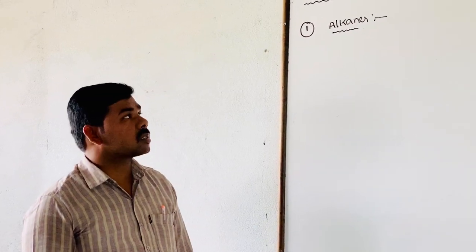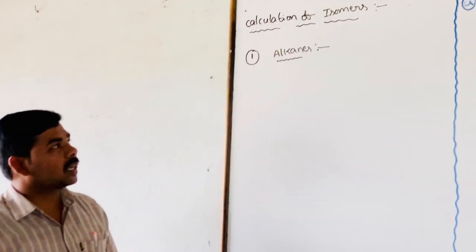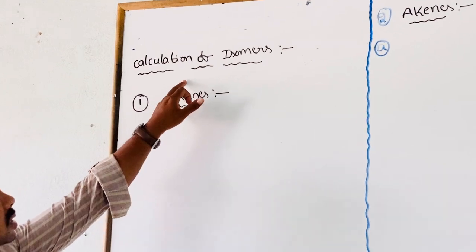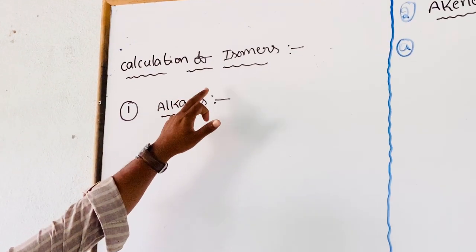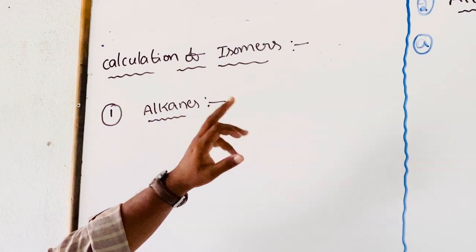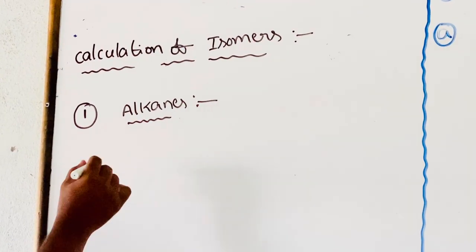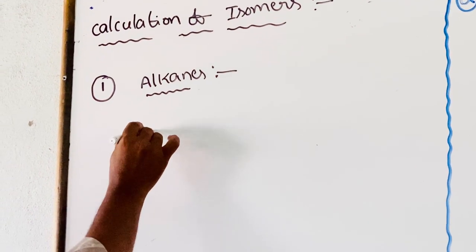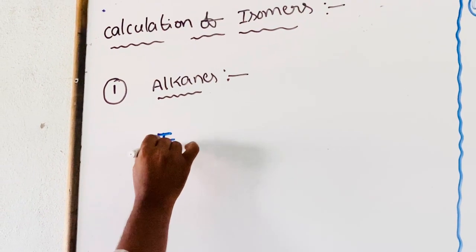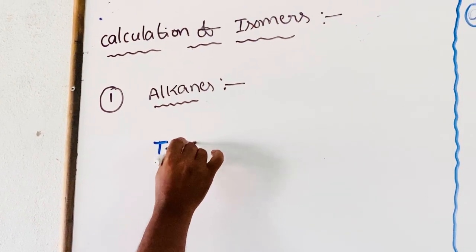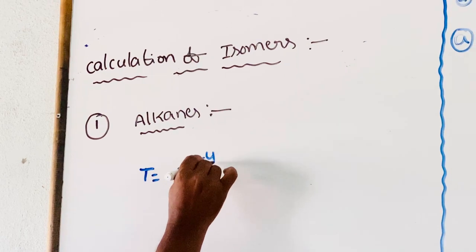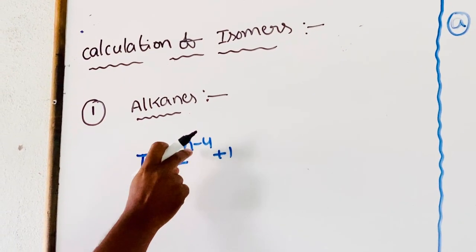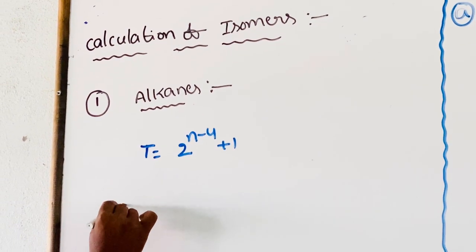Good morning students. Today we discuss the topic: calculation of isomers in all kinds. For all kinds, the total number of isomers formula is T = 2^(n-4) + 1, where n is the number of carbon atoms.